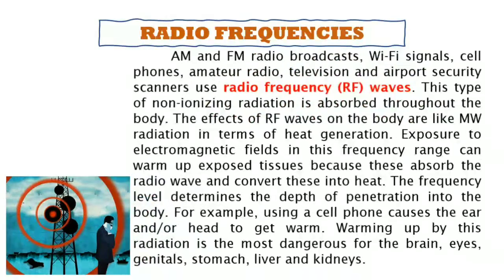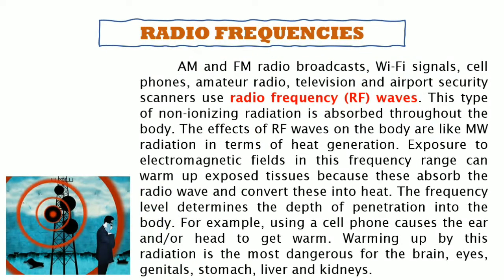Radio frequencies: amplitude modulation (AM) and frequency modulation (FM) radio broadcasts, Wi-Fi signals, cell phones, amateur radio, television, and airport security scanners all use radio frequency waves. This type of non-ionizing radiation is absorbed throughout the body. The effects of radio frequency waves are similar to microwave radiation in terms of heat generation. Exposure can warm exposed tissues because the body absorbs the radio wave and converts it into heat. The frequency level determines the depth of penetration into the body. For example, using a cell phone causes the ear or head to get warm, and this warming is most dangerous for the brain, eyes, genitals, stomach, liver, and kidneys.